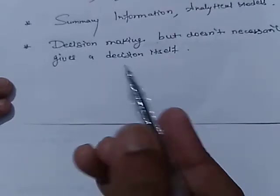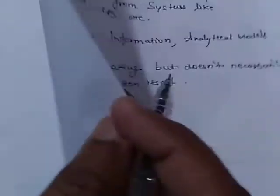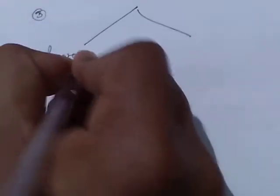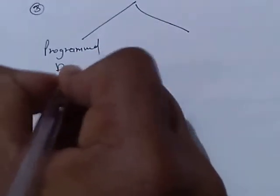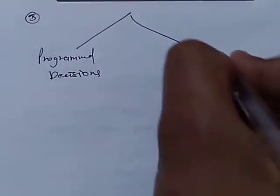There are two types of decisions: number one is programmed decisions, and number two is non-programmed decisions.